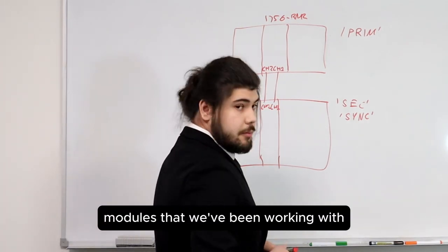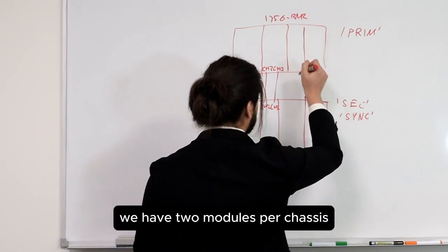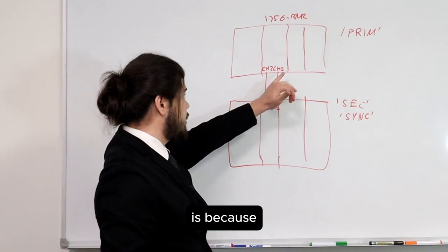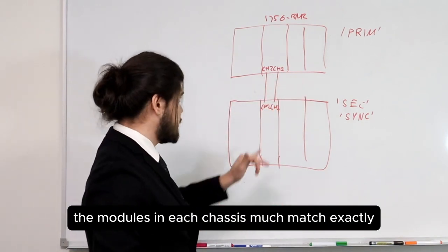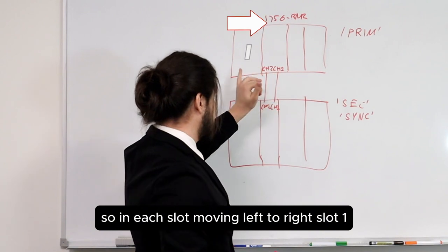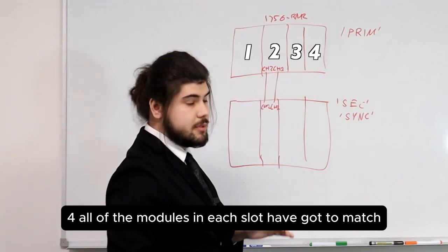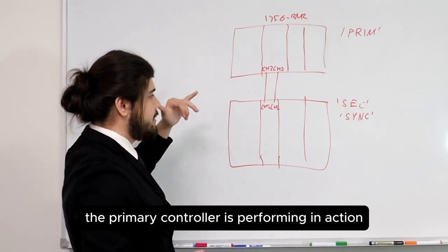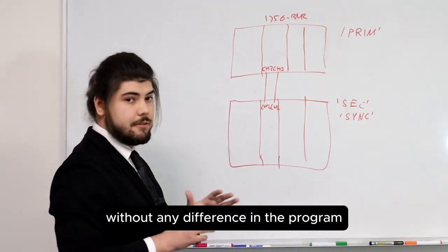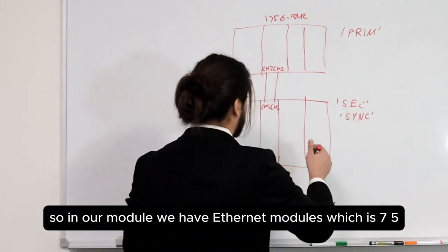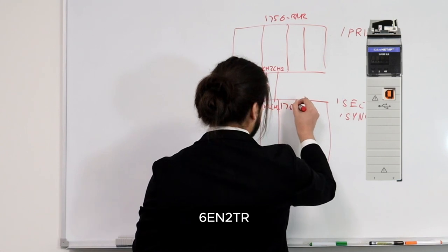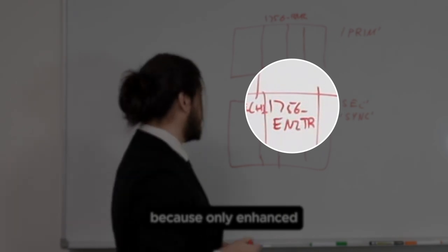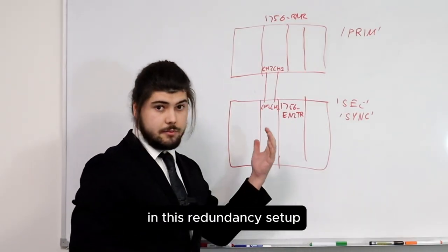The communication modules we've been working with are Ethernet modules. We have two modules per chassis, and the reason is that the modules in each chassis must match exactly. So in each slot moving left to right, all of the modules in each slot have got to match. The idea is that if the primary controller is performing an action, the secondary controller can immediately perform that action without any difference in the program or hardware configuration. In our module we have two 756-EN2TR Ethernet modules. The 'two' is important because only enhanced Ethernet communication modules can be used in this redundancy setup.